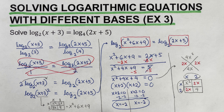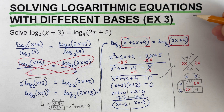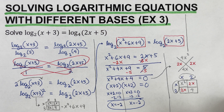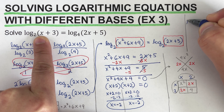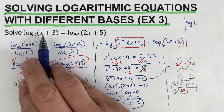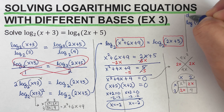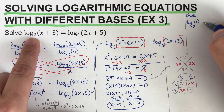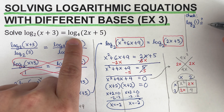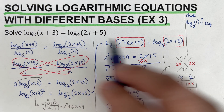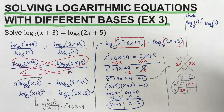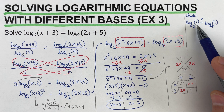Both factors give x = −2 as the answer. We now check whether x = −2 works in the original equation. Plugging in x = −2: on the left side we get log of (−2 + 3) = log of 1 to the base 2. On the right side we get log of (2(−2) + 5) = log of (−4 + 5) = log of 1 to the base 4.